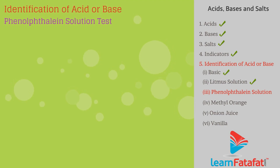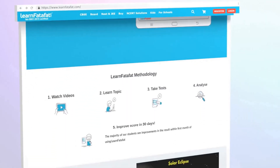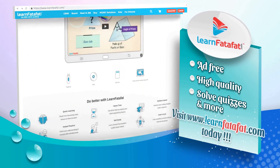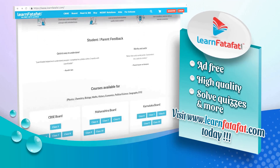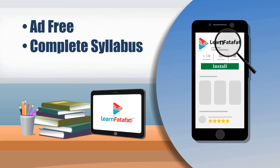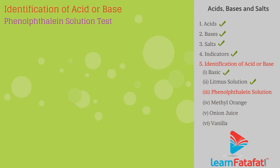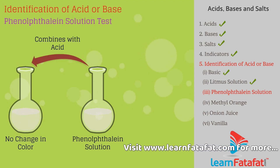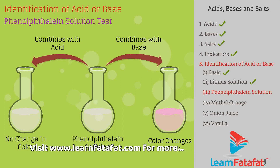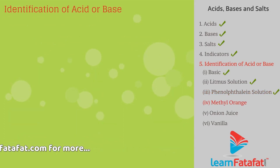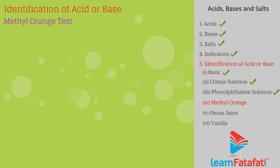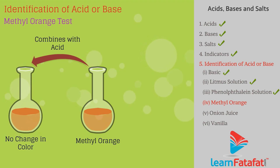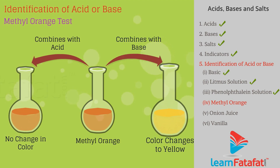Phenolphthalein solution test: In acidic solution, phenolphthalein is colorless, while in basic solution it changes color to pink. Methyl orange test: In acidic solution, methyl orange is red, while in basic solution it changes color to yellow.